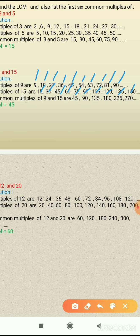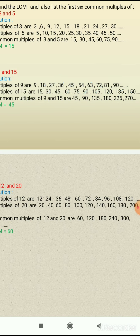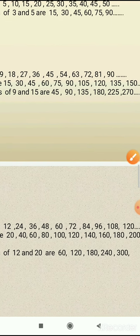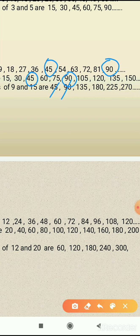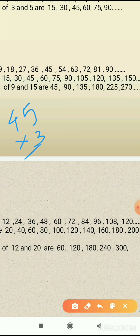Now we have to find the common multiples. We look for common multiples and encircle them. The first common multiple of 9 and 15 is 45, we encircle and write it. The second common multiple is 90. Now here we have written only two common multiples, but we need to list six common multiples. The third is obtained by multiplying 45 by 3: 3 fives are 15, carry 1, 3 fours are 12, plus 1 is 13. So the third common multiple is 135.